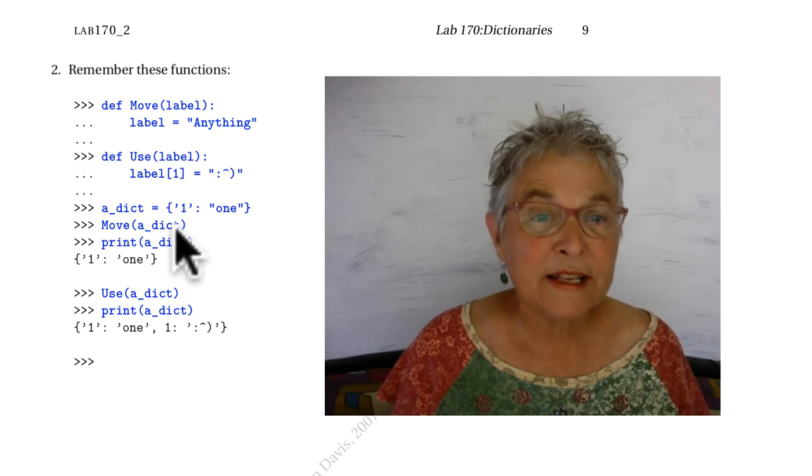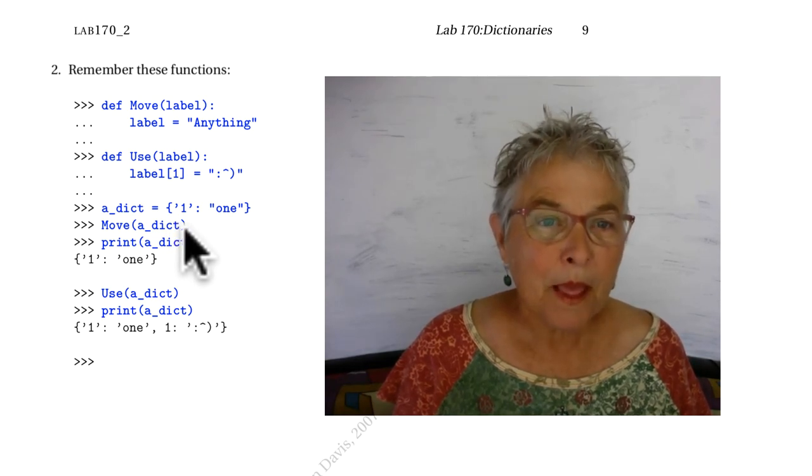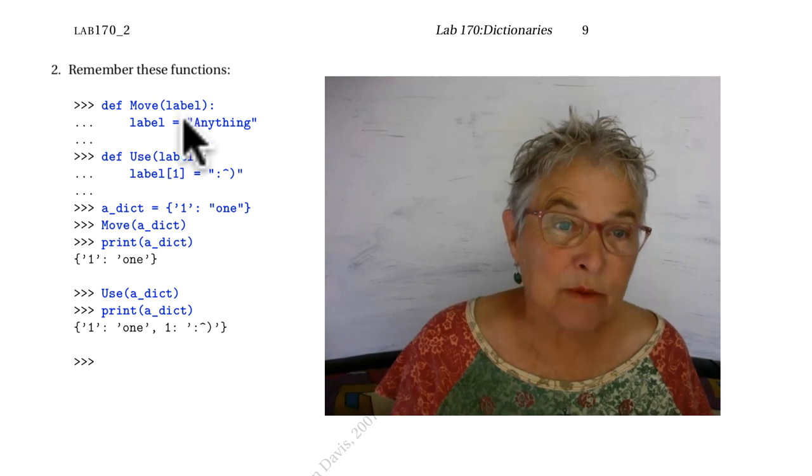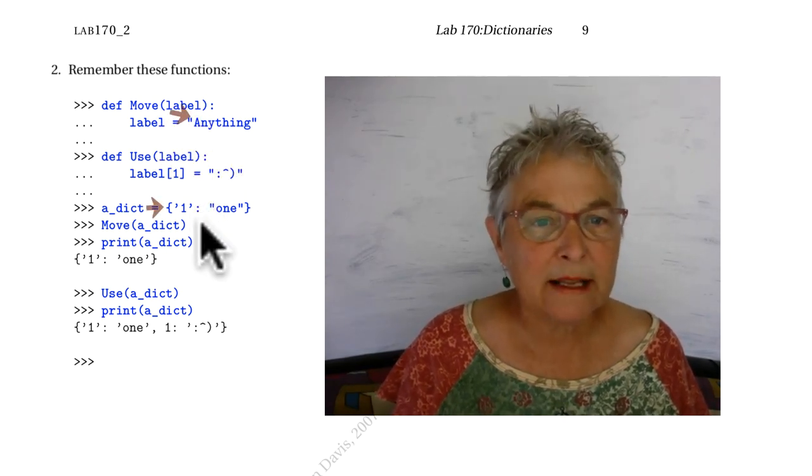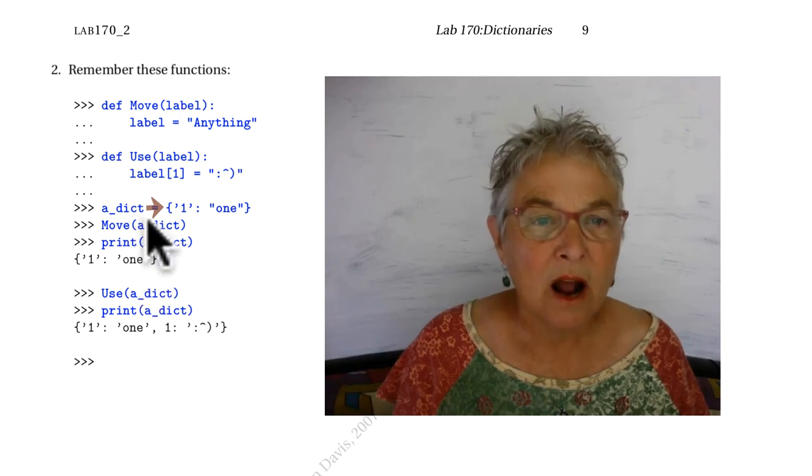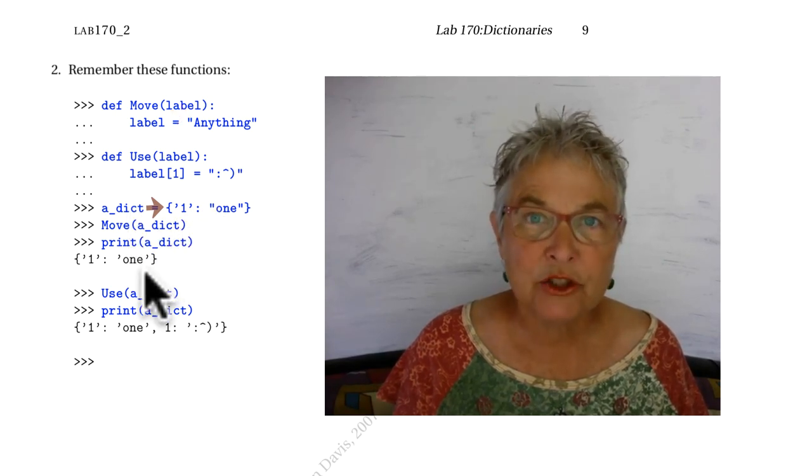And we see that this label is on our dictionary, and then we move it over to anything and nothing happened. We still have our local identifier on the very same dictionary.